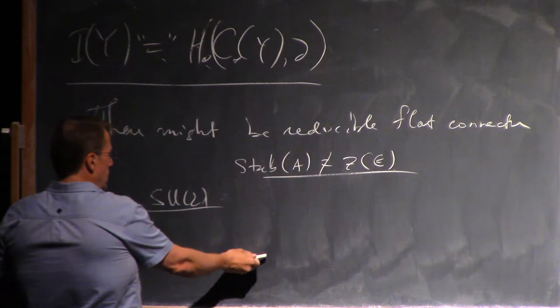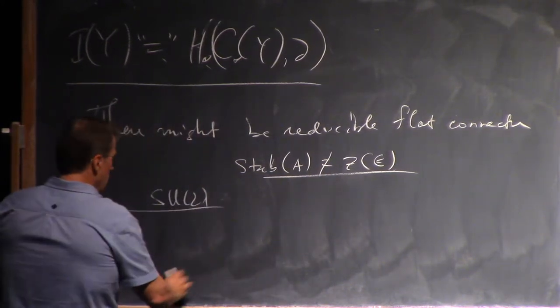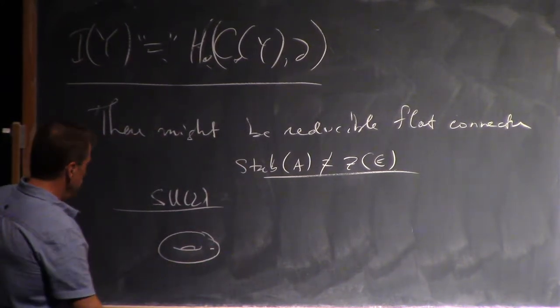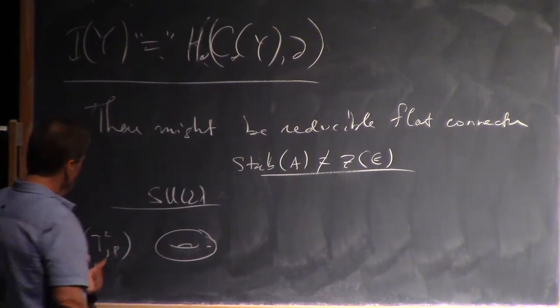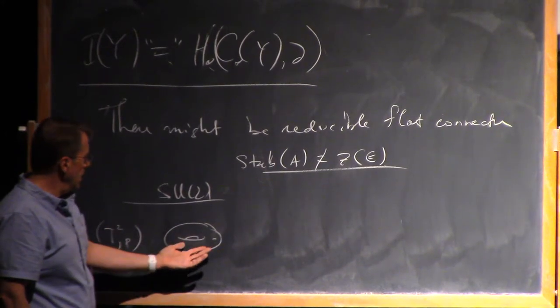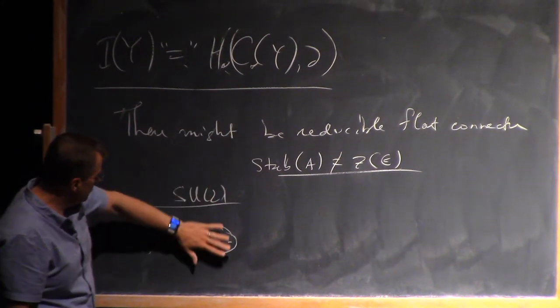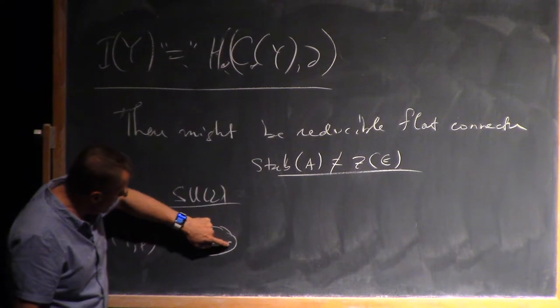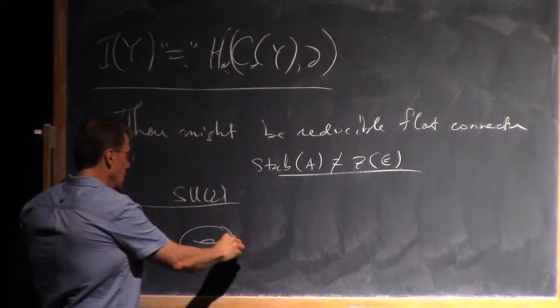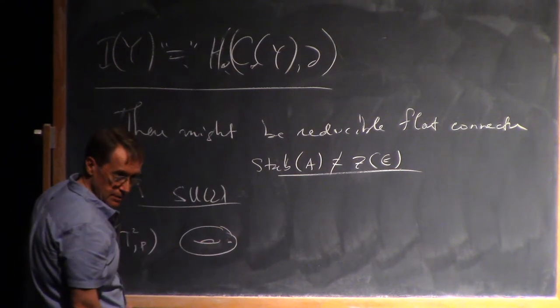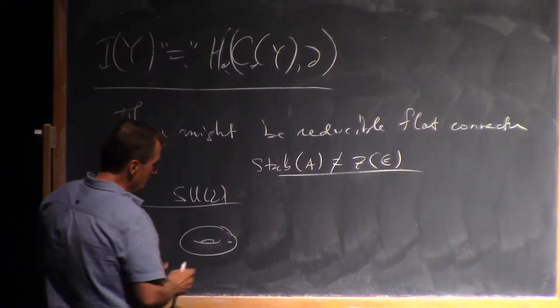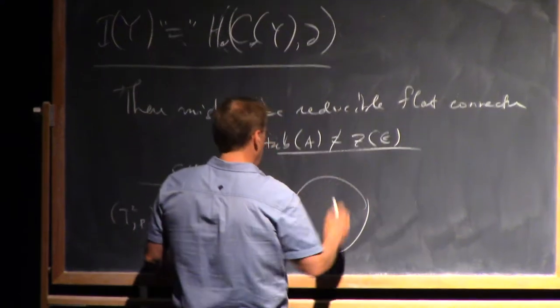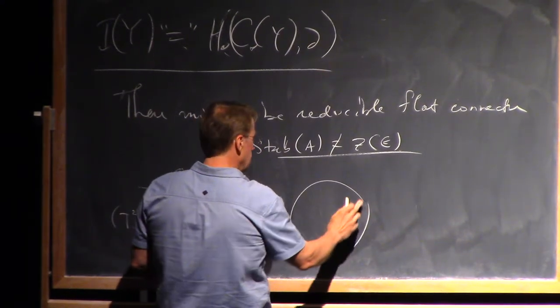Let's think about SU2. Not equal to the center. Centers just plus or minus the identity. In this case, if we have reducibles, then that kind of, if you think carefully through the story, it wreaks some havoc. But there's a nice trick that we can do to avoid reducibles. Alternatively, we can work much harder. Now, the trick is, remember...